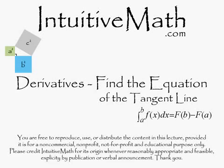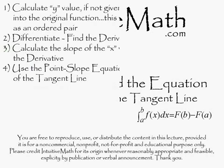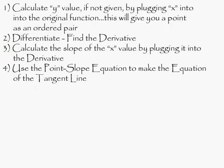Okay, and welcome back. So I'm going to explain how to find the equation of the tangent line. So here are basically the steps you would use. You would calculate the y value, if not given, by plugging x into the original function, and this will give you a point as an ordered pair.